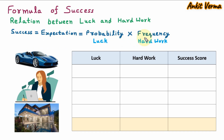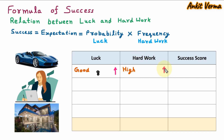Now we are going to check this formula of success and find the relation between luck and hard work. In Case 1, luck is good — represented with an upside arrow — and out of 10 we are giving it a score of 8. The hard work is also high with a score of 8. So as per the formula, success equals luck into hard work, which is 8 into 8, giving a success score of 64.